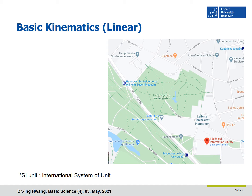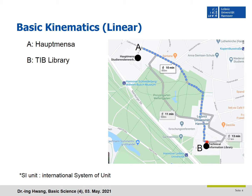The first thing I would like to talk about is distance and displacement. These two concepts are often confused, but they are not the same. Here, point A is the Haumanza, and point B is TIB Library of Leibniz University, Hanover. You can check various routes from Haumanza to the library on Google Maps. Each path has a distance — like 850 meters, 900 meters, and 1.1 kilometers. That is distance. Between two points A and B, any paths are possible, and they all have different distances.